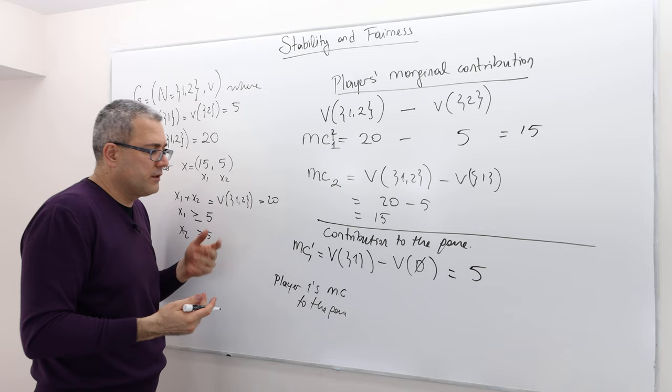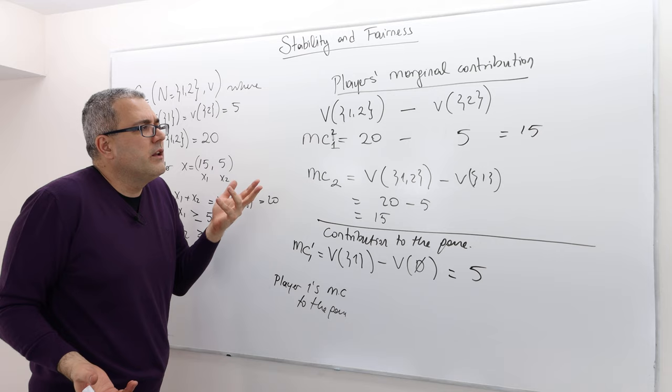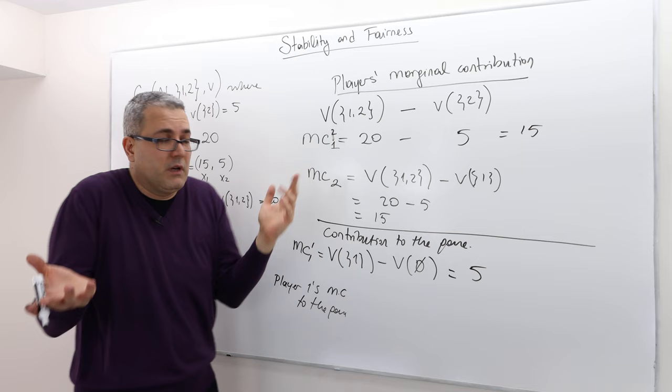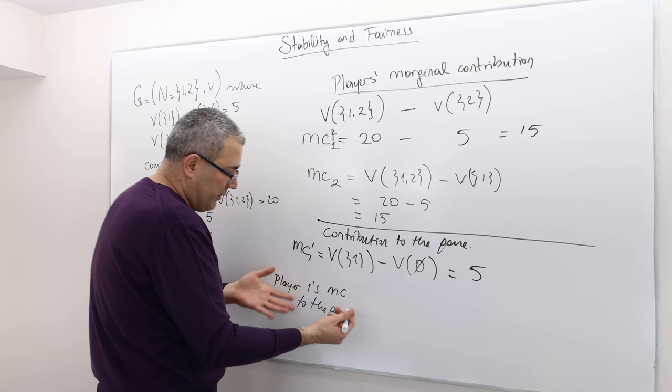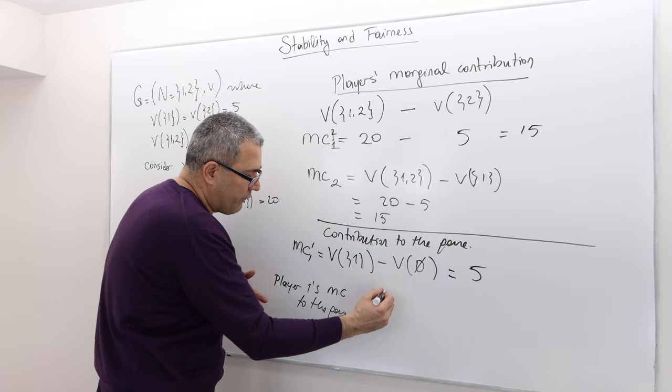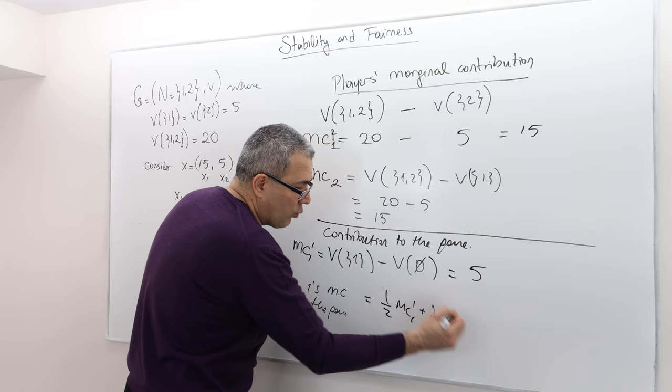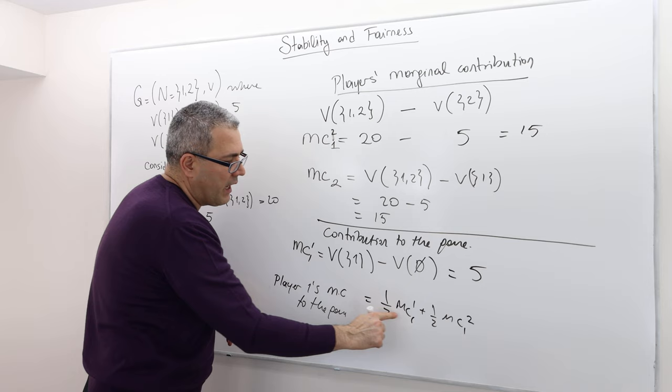All right? Well, why average? I know, it's a bit ad hoc, right? I mean, why one half this, one half that? But, I mean, it's like, you can define fairness any way you like. I can't really make an argument against this because it makes sense. So player 1's marginal contribution to the game is, therefore, 1 over 2 MC1 plus 1 over 2 MC1,2, okay? So it makes more sense because MC1 is 5, so 1 over 2, 5, plus 1 over 2 MC2 is 15.